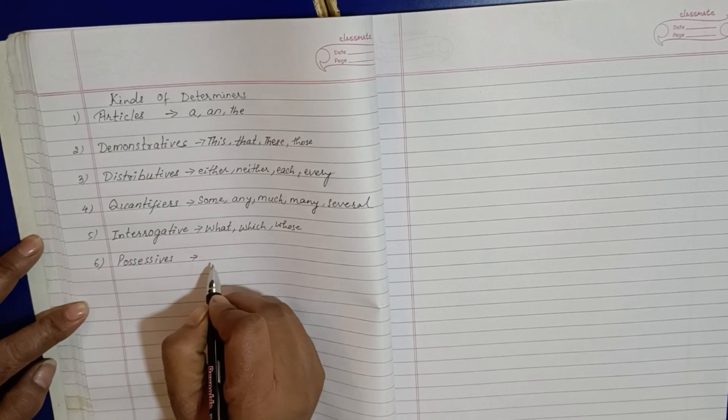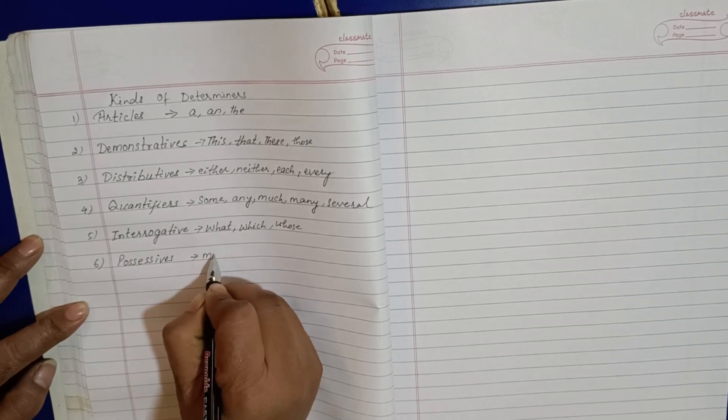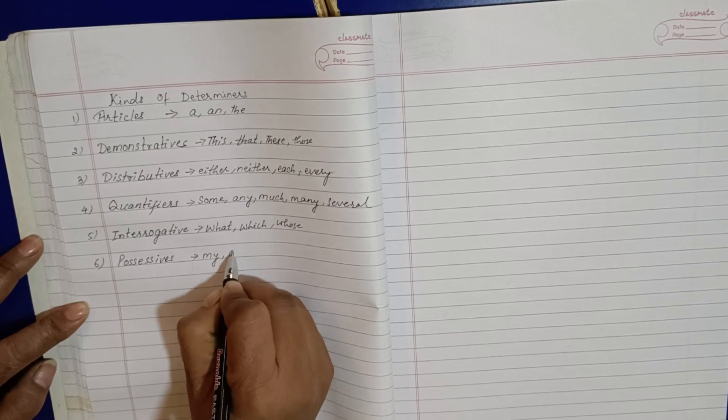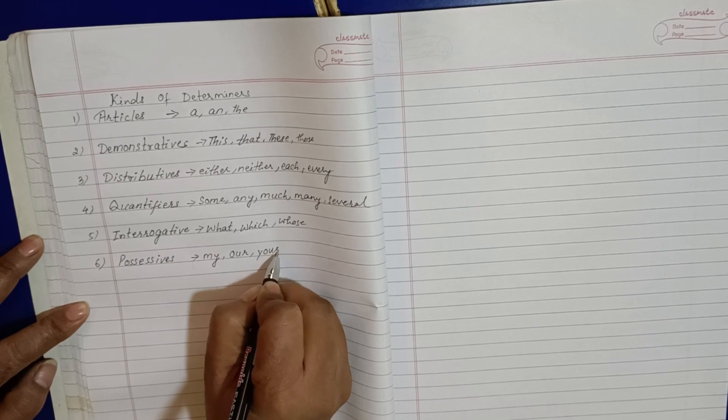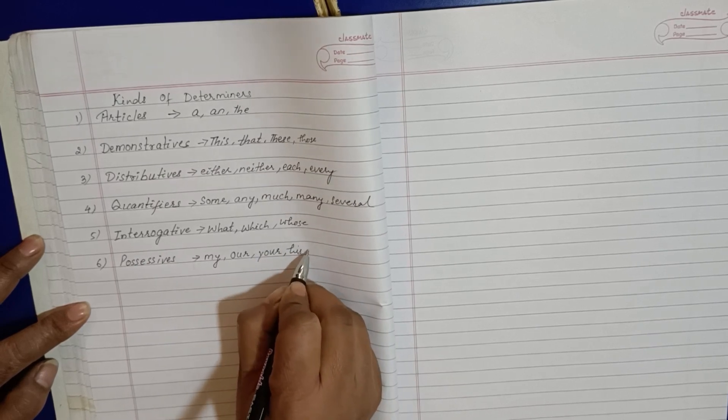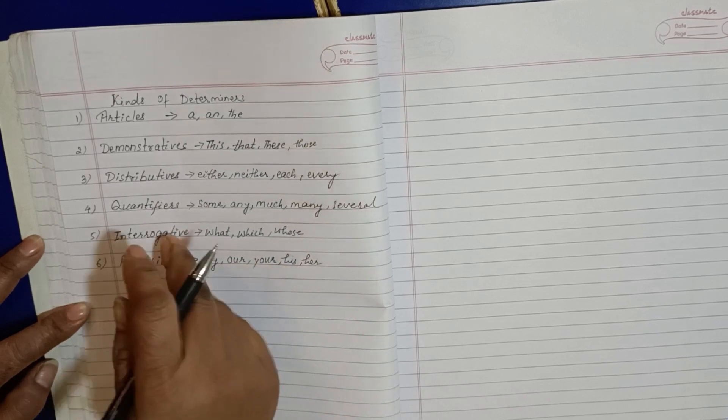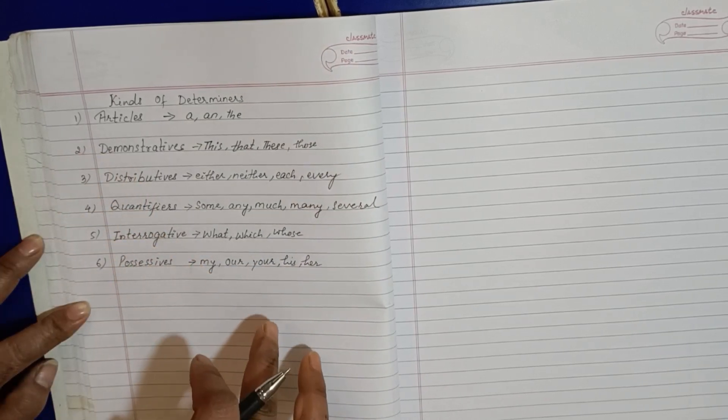Now last one is possessives. In this - my, our, your, his, her. These are what? These are the six determiners.